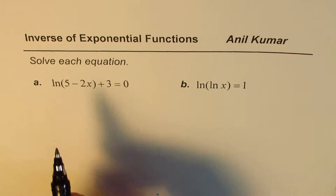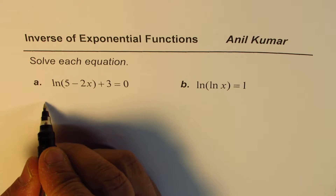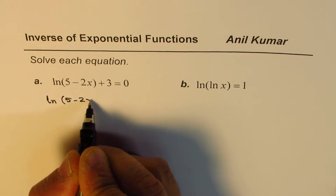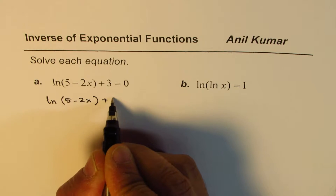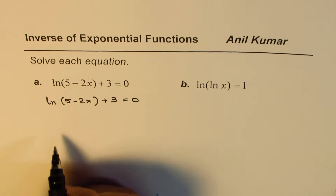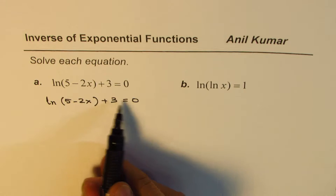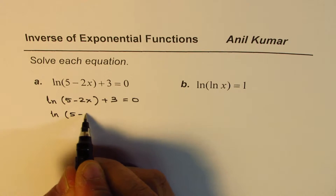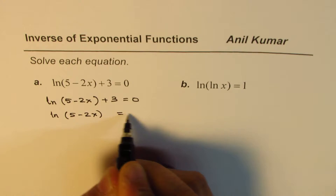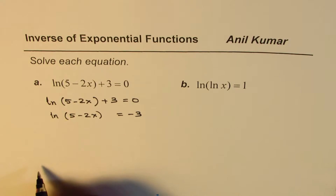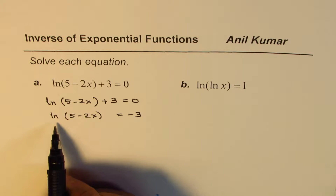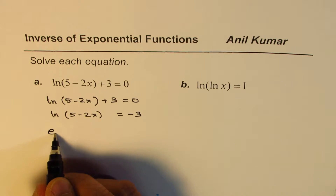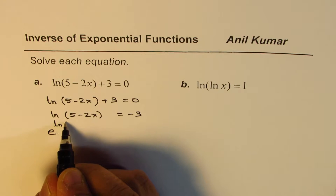Let's do the first one: ln(5 minus 2x) plus 3 equals 0. We can take 3 to the right side, so we get ln(5 minus 2x) equals minus 3. Now, ln is the inverse of e, so we could write this as e to the power of ln(5 minus 2x) equals e to the power of minus 3.